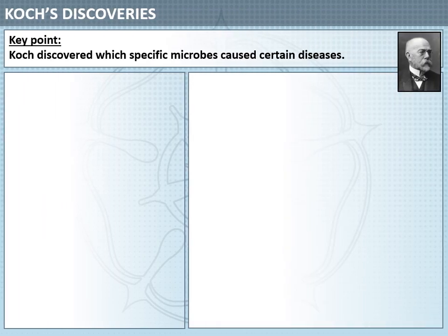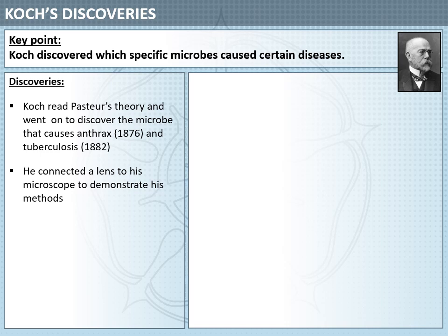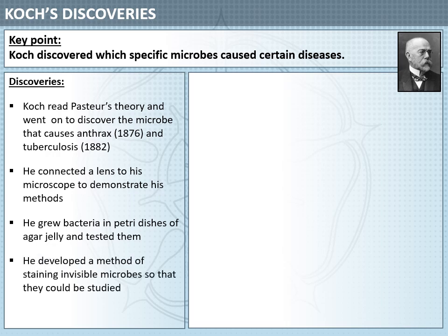That's where Robert Koch comes in, because Robert Koch discovers which specific microbes cause certain diseases. He reads Pasteur's theory and discovers the microbes causing anthrax and tuberculosis. He does this by connecting a lens to his microscope, which allows him to photograph his methods and demonstrate them. He grows bacteria in petri dishes of agar jelly to test them, and he develops a method of staining invisible microbes so they can be studied. He also discovers the microbe causing cholera in 1883.